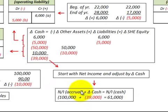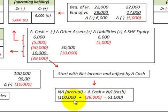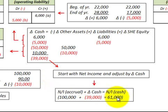We start out with an accrual amount in net income, then add in the cash change, and that equals our net income on the cash basis. Using the example where we began with a $100,000 accrual net income, we added a minus $39,000, and ended up with a net income on the cash basis of $61,000.